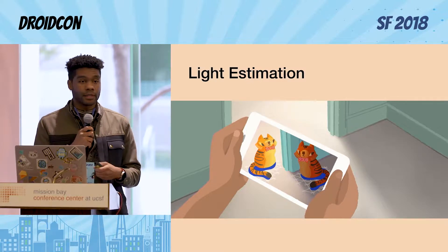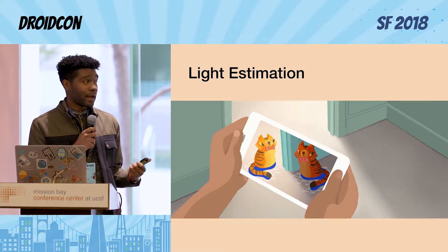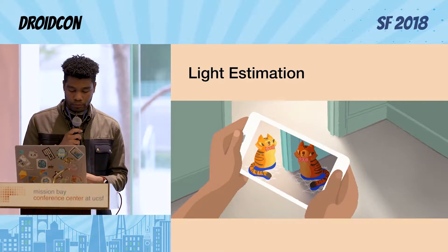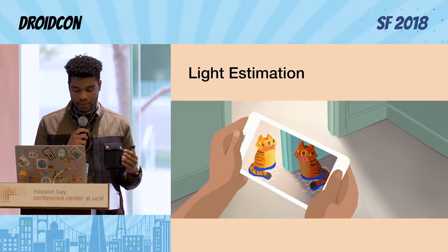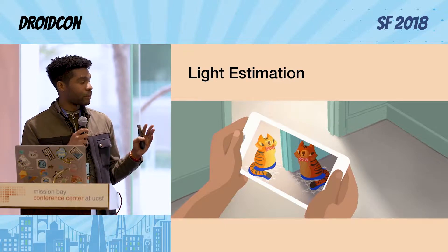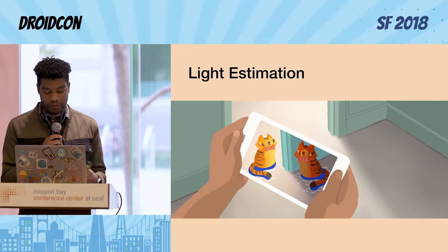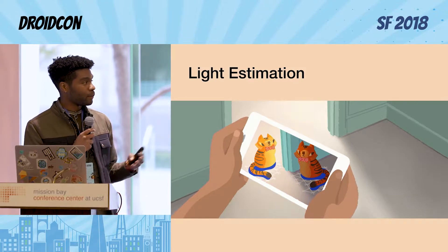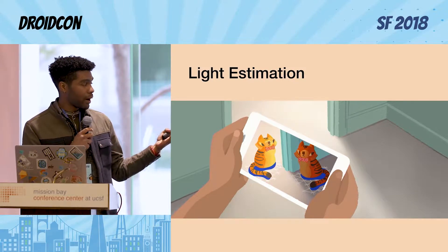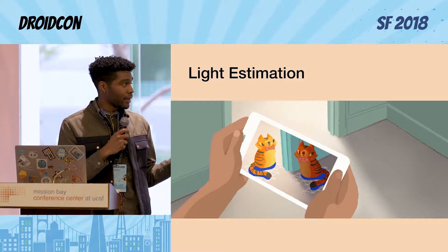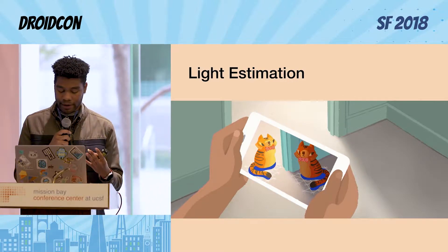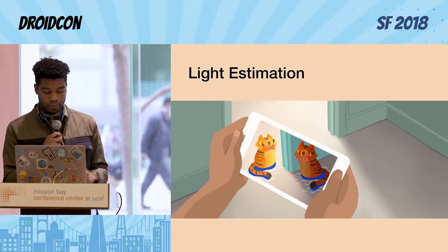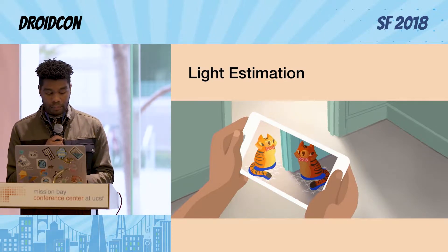ARCore can detect information about the lighting in the environment. This is not something we had pre-1.0, but it's something that Google added after 1.0. As you're panning your camera, it's also getting light information so that it can give an average intensity of the light. As you can see on this image, if you place two AR objects — one in a shaded area, one in a lit area — they should be lit appropriately.